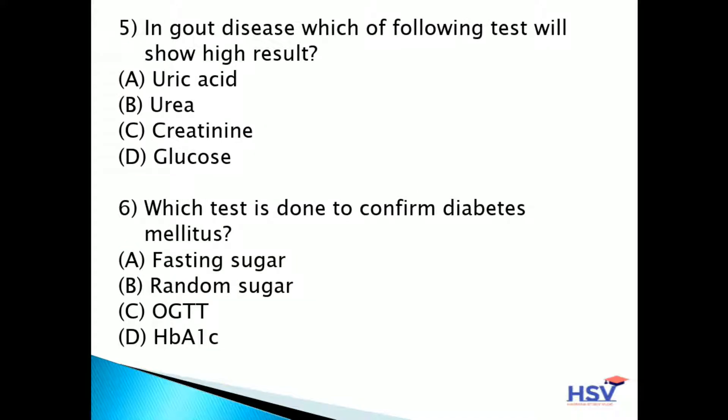Fifth question: in gout disease, which of the following tests will show a high result? Option A: uric acid. Option B: urea. Option C: creatinine. Option D: glucose. The answer is option A — uric acid shows a high result in gout disease.